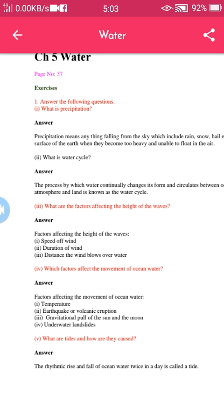Question number four: Which factors affect the movement of ocean water? Factors affecting the movement of ocean water are: first, temperature; second, earthquake or volcanic eruption; third, gravitational pull of the sun and the moon; fourth, underwater landslides.